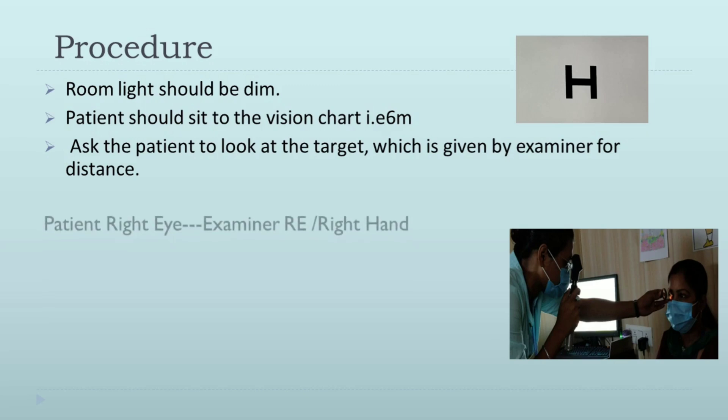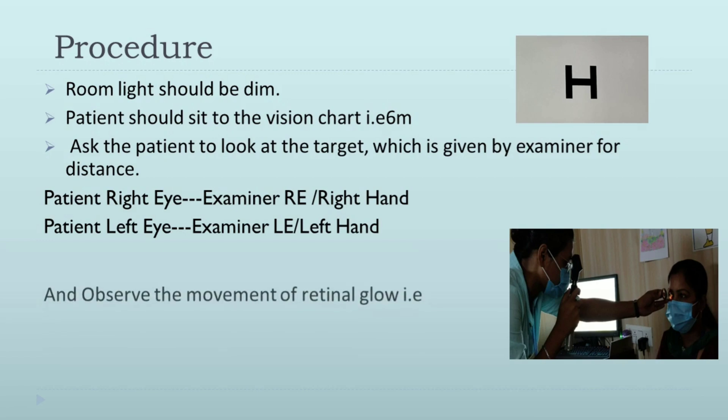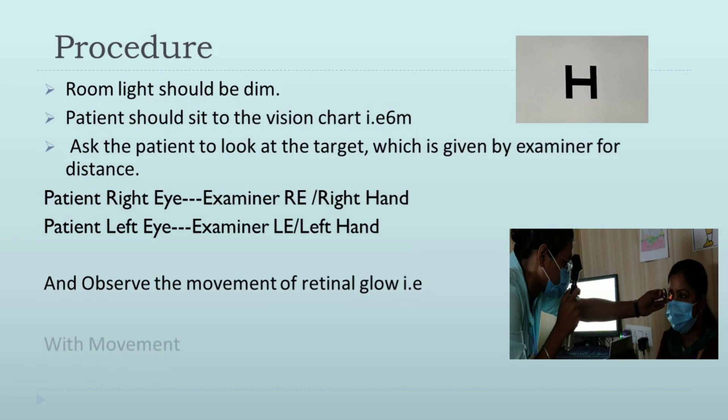This is very important while performing retinoscopy. New students should follow these rules: for the patient's right eye, use the examiner's right eye with the right hand. For the patient's left eye, use the examiner's left eye with the left hand. Then observe the movement of the retinal glow, which will be either with movement or against movement.